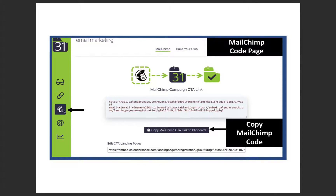I'm going to drop right to MailChimp code. You'll see MailChimp code indicated by the chimp icon — you'll see it here at the top. You'll click MailChimp. By default it drops you into MailChimp, and you can see here 'MailChimp copy code.' It's as simple as this. You copy this code into your clipboard, or if you want to copy-paste it using your browser you can do that here. Click here and it'll go to your clipboard.